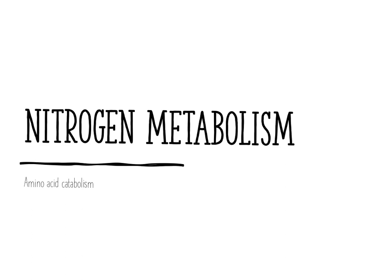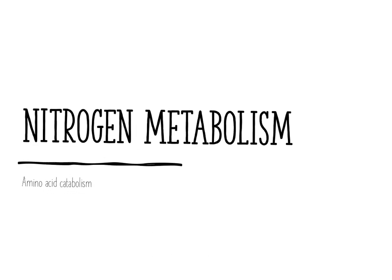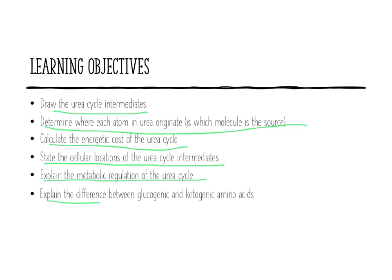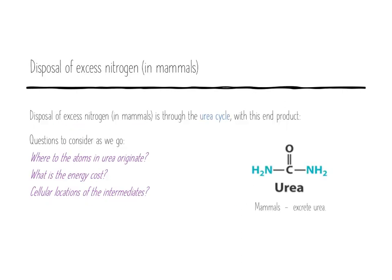Here we go — this is nitrogen metabolism, looking at amino acid catabolism. We're going to break down the amino acid all the way into its nitrogen components and its carbon components, spending most of our time looking at how to get the nitrogen off of the amino acid through the urea cycle, make urea, and get it out of the body. You need to be able to draw all the intermediates of the urea cycle, determine where each atom in urea originates, calculate the energetic cost, state the cellular locations of intermediates, explain metabolic regulation, and explain the difference between glucogenic and ketogenic amino acids.